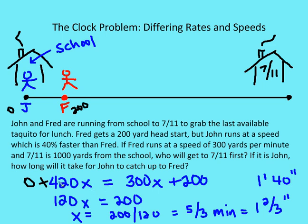I subtract 300x from both sides and get 120x equals 200. Solving for x gives me 200 over 120, which equals five-thirds minutes — the same as one and two-thirds minutes, which is one minute 40 seconds. Now the question is: at one minute 40 seconds, when John and Fred are at the same location, has either of them gotten to 7-Eleven to get that last taquito?